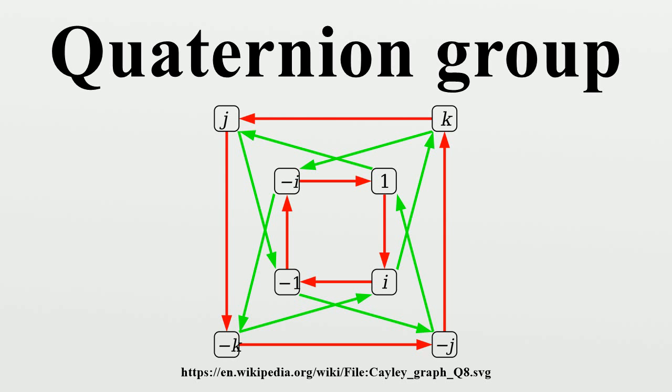Generalized quaternion group. A group is called a generalized quaternion group when its order is a power of 2 and it is a dicyclic group. It is a part of more general class of dicyclic groups. Some authors define generalized quaternion group to be the same as dicyclic group.